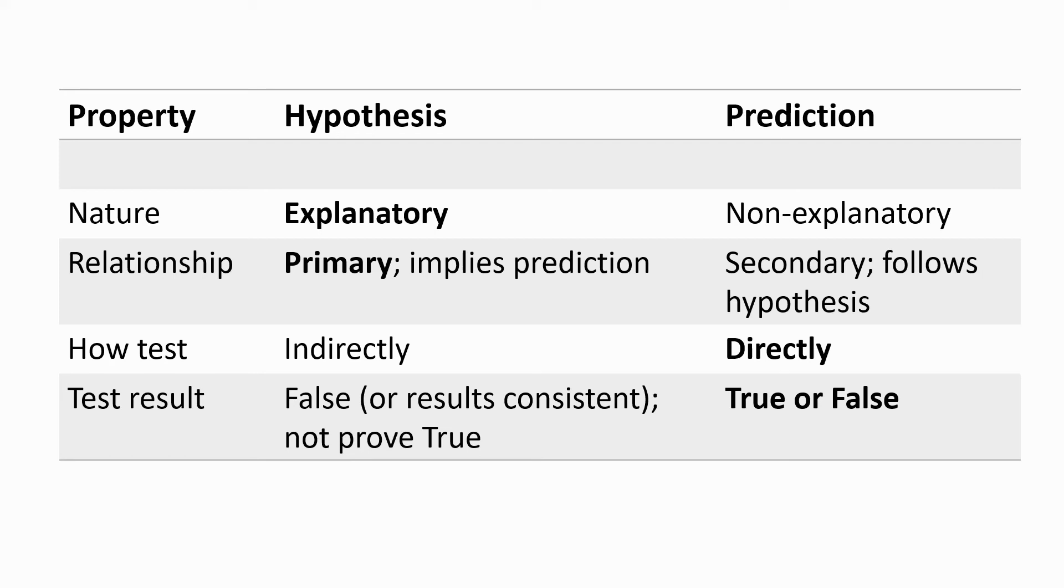Now, this table summarizes many of the points that we've made. The hypothesis is explanatory, whereas the prediction is non-explanatory. The hypothesis is the primary concept. It implies predictions, and therefore predictions are secondary, and they follow from hypotheses. We can test both hypotheses and predictions, but we test hypotheses only indirectly by testing their predictions, whereas we test predictions directly by making measurements. As a result of the testing, we can only show that a hypothesis is false or that the results are consistent with it, but we can't prove that a hypothesis is true. A prediction, on the other hand, we can find is either true or false. Now, in later videos, we'll refer to the points made in this table, and you'll see how useful it is to keep the distinction between hypothesis and prediction clear.